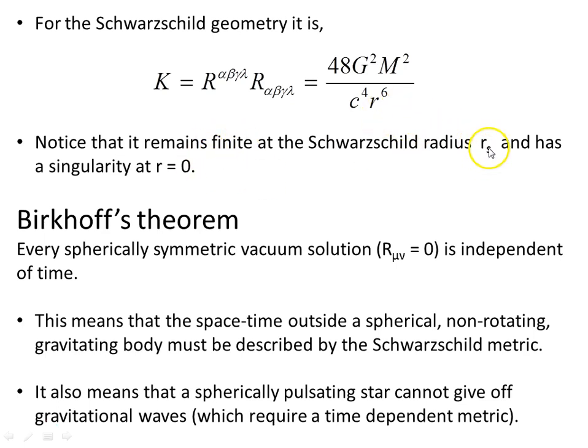But at the Schwarzschild radius rs that we saw on the previous page, this remains finite. If we substitute in 2GM over c squared into here, this whole object still remains finite. The curvature is still finite, and so there is not a singularity at the Schwarzschild radius. That is merely the result of a choice of coordinates, and with a different choice of coordinates, that singularity could be removed. But there is a real physical singularity at r equals 0.